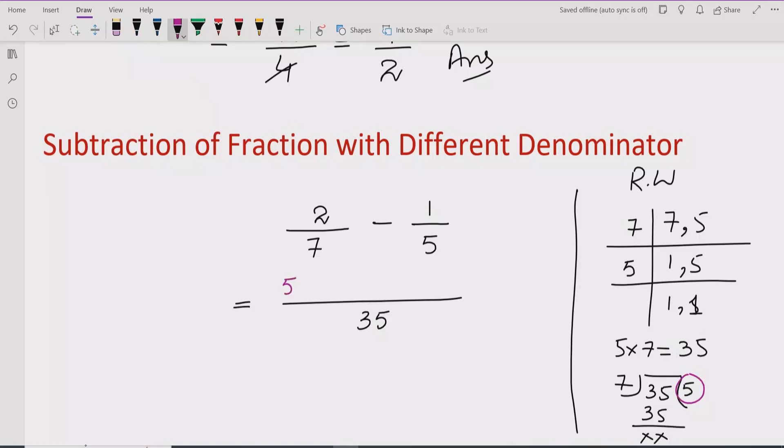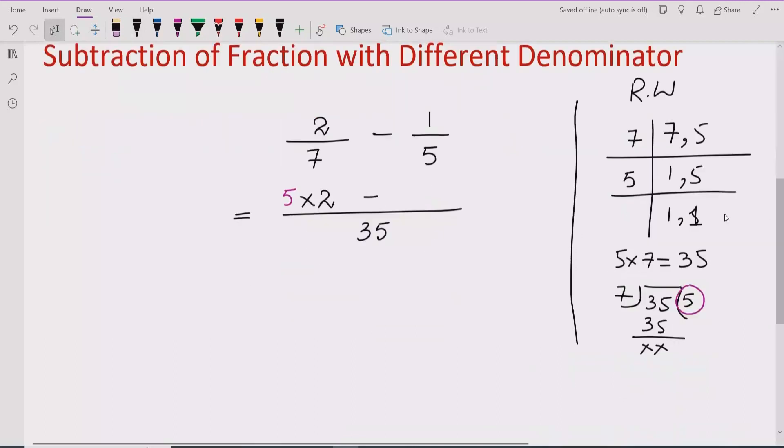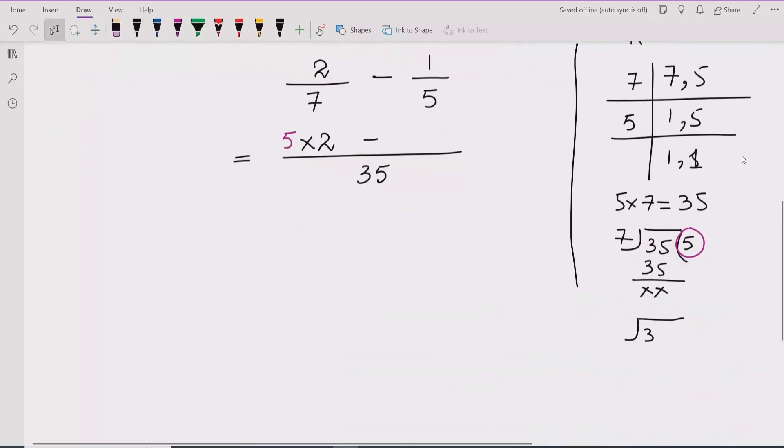So 5 multiplied by, minus, and now we will write, we will simplify this one. Again we will write 35.